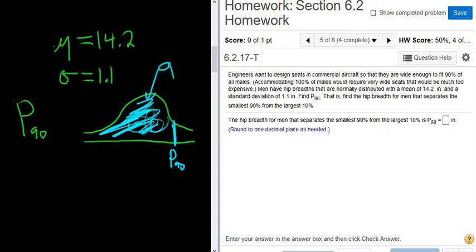So P90 is the number so that 90% is to the left. In decimal form, this means the area is 0.90. To find P90, we'll go into StatCrunch.